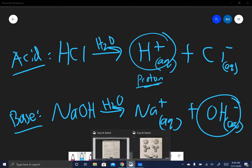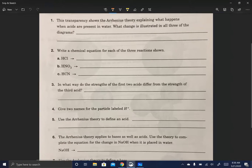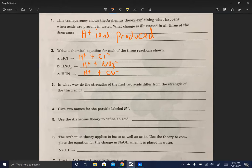So now we go to the questions. This transparency shows Arrhenius theory, explaining what happens when acids are... what changes illustrate in all three diagrams. So we would write H plus ions produced or released. Chemical equation for all three: H plus plus Cl minus, H plus plus NO3 minus, H plus plus CN minus. In what way do the strengths differ? HCl and HNO3 are strong acids.